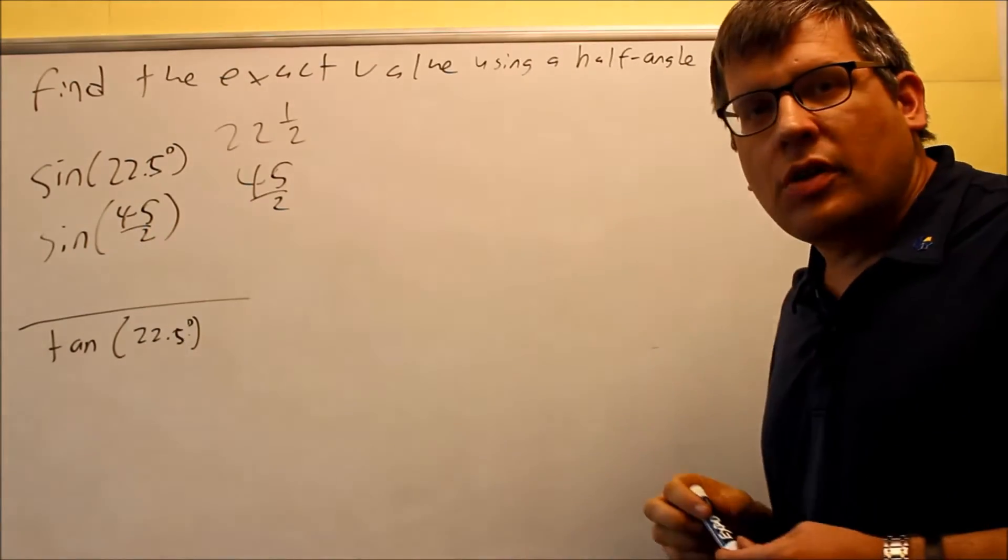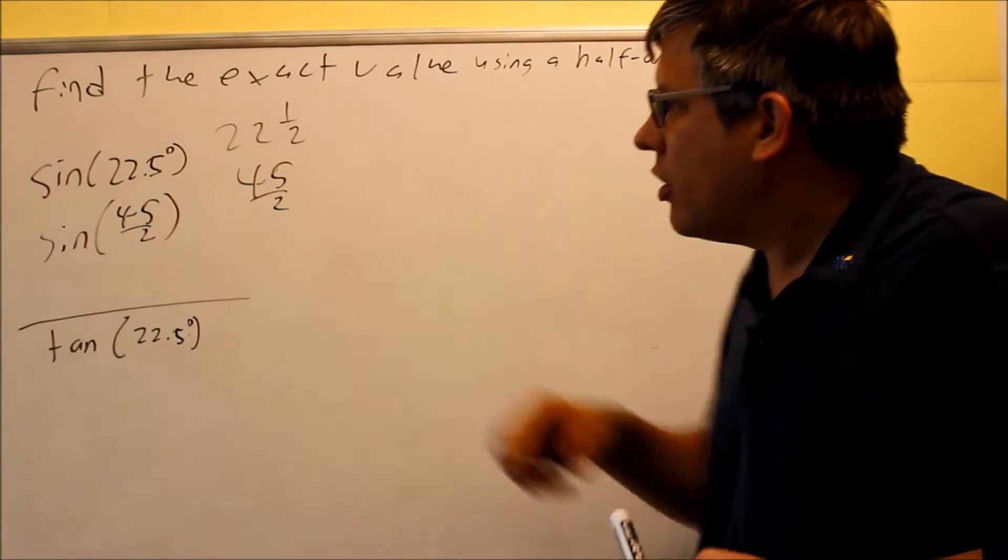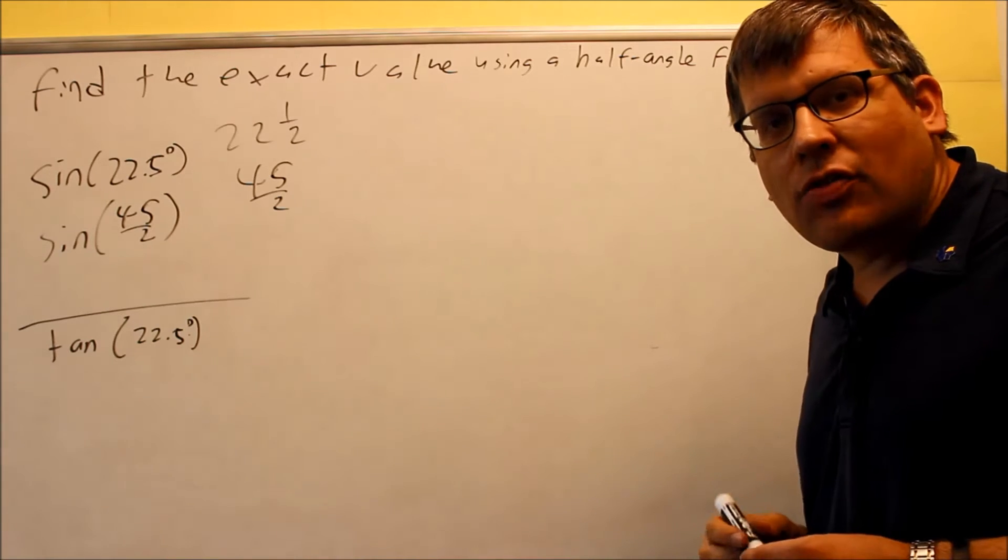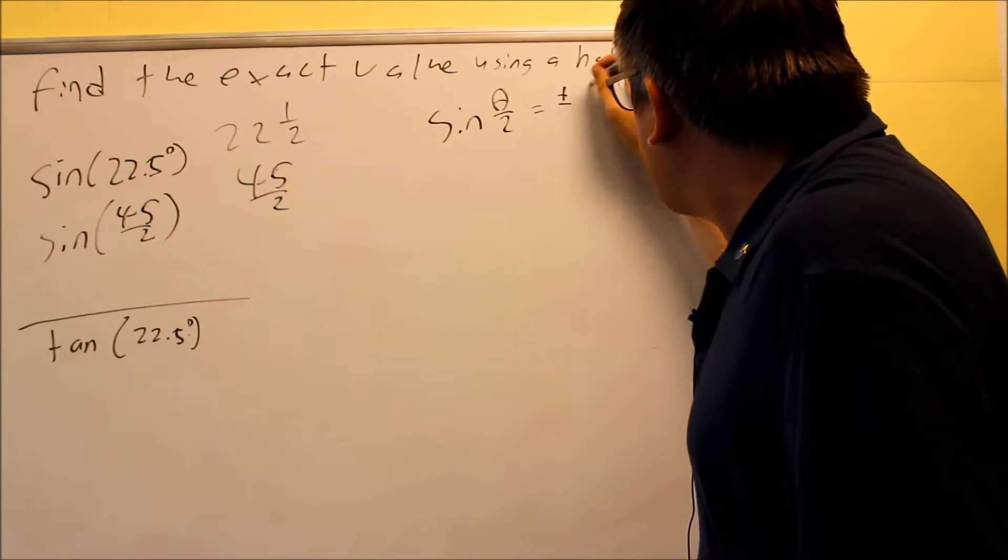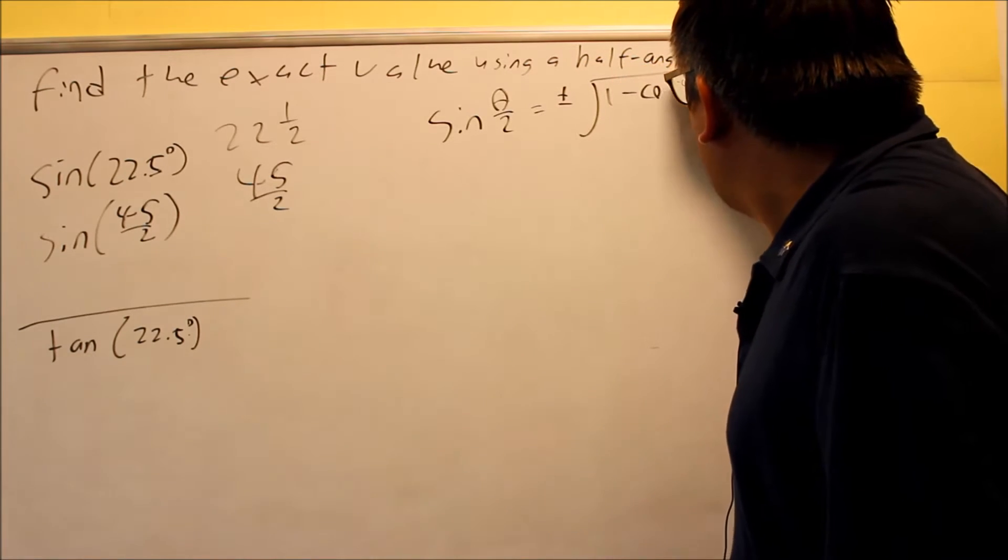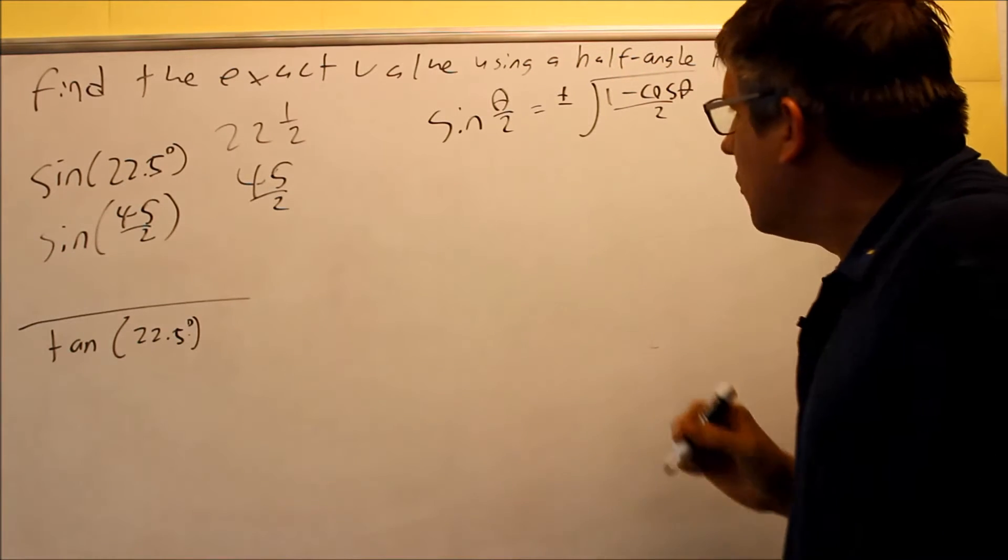Because it's written in this form, now I can see more clearly what it is I need to use for my theta. If I look at the formula, the half-angle formula for sine, that's this one here, 1 minus cosine theta all over 2.